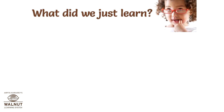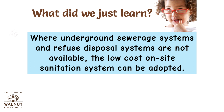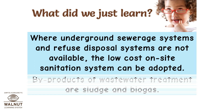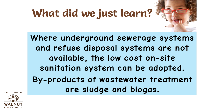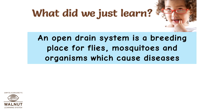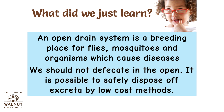What did we just learn? Where underground sewerage systems and refuse disposal systems are not available, the low-cost on-site sanitation system can be adopted. By-products of wastewater treatment are sludge and biogas. An open drain system is a breeding place for flies, mosquitoes, and organisms which cause diseases. We should not defecate in the open. It is possible to safely dispose of excreta by low-cost methods.